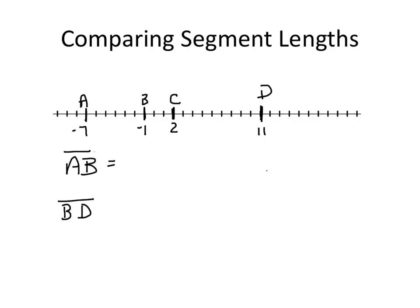So the measure of segment AB is going to be the absolute value of negative 7 minus negative 1. And that's going to be the absolute value of negative 7 plus 1, which is the absolute value of negative 6, which is positive 6.